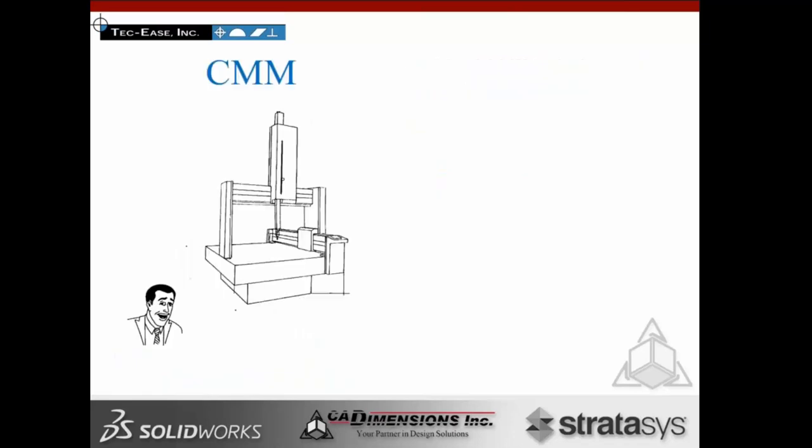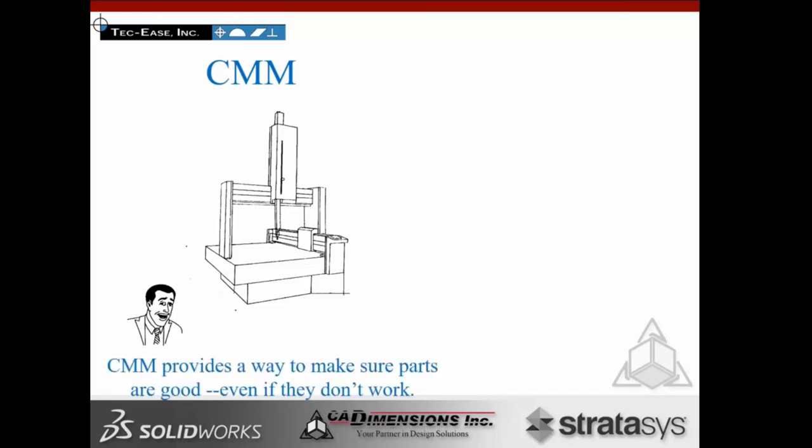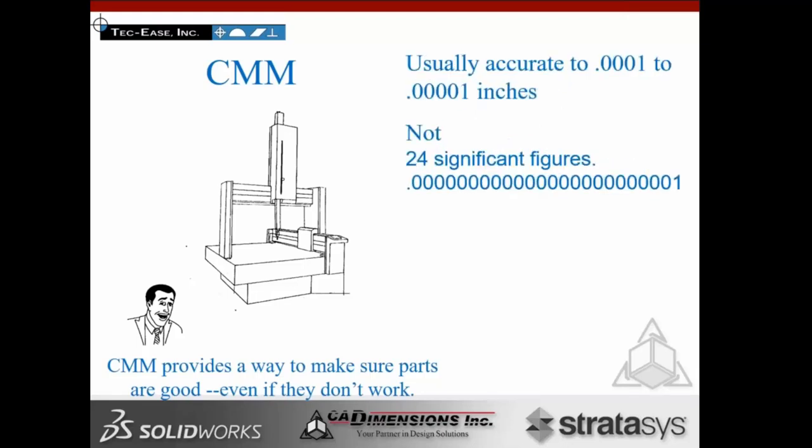A coordinate measuring machine provides a way to make sure parts are good even if they don't work. Having worked on a CMM, I can make that printout look pretty good — no red numbers on the report — and that's the problem. Most folks see no red numbers and assume the part is good. If we don't understand how the part was set up on the CMM to simulate function with respect to a datum reference frame, and they just do a best-fit routine — moving the part around until it fits within the tolerance zones — we're only accurate to four or five significant digits, not 24.